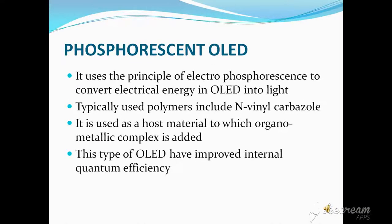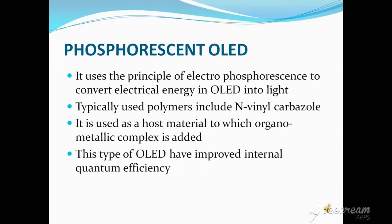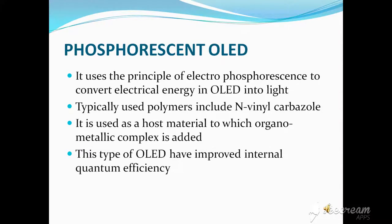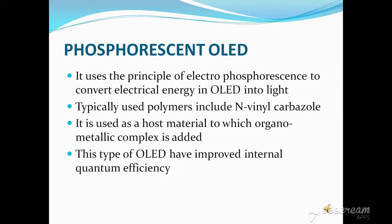Phosphorescent OLED uses the principle of electrophosphorescence to convert electrical energy in OLED into light in a highly efficient manner. Typically a polymer like N-vinyl carbazole is used as a host material to which an organometallic complex is added. It has improved internal quantum efficiency.